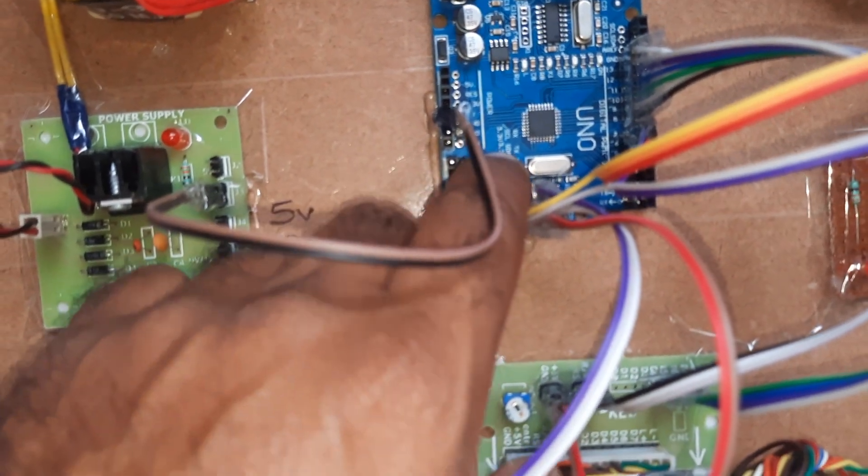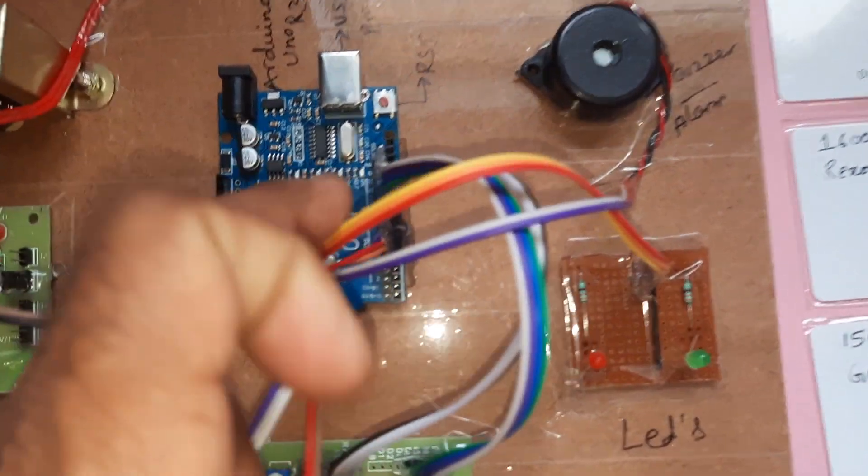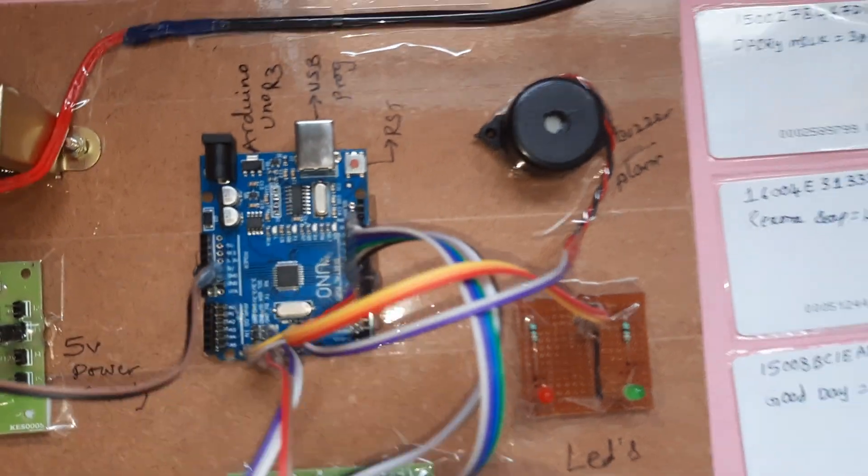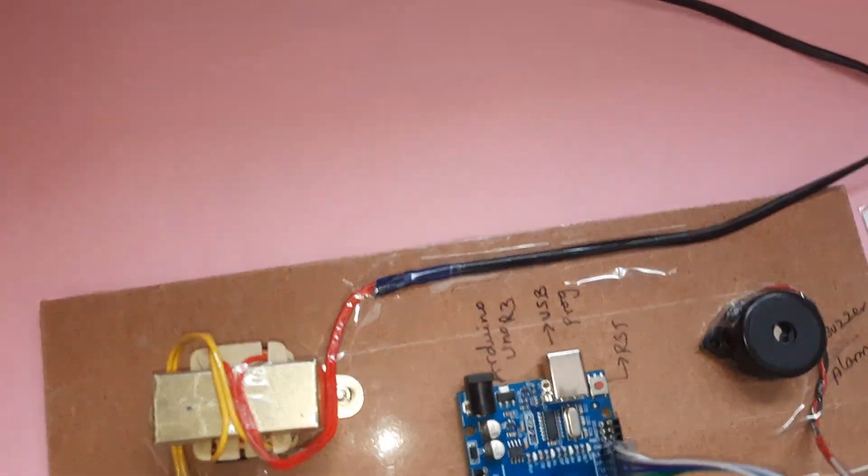RX is connected to pin zero. One red LED and green LED are connected to sixth pin and fifth pin. Alarm is connected to seventh pin. Now I'm going to give the power supply.